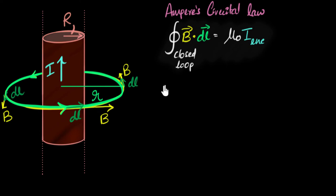Okay let's do this together. So what happens when I simplify the left hand side? Let's only consider the left hand side. B and dl are in the same direction. So what happens to B dot dl? Remember dot product?